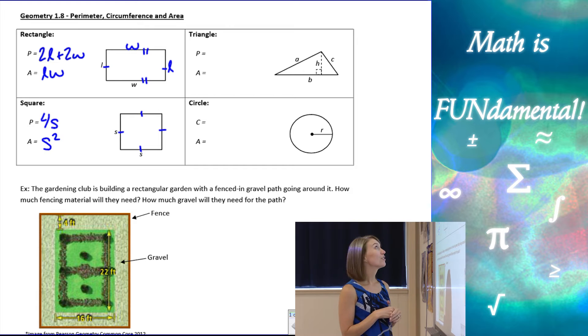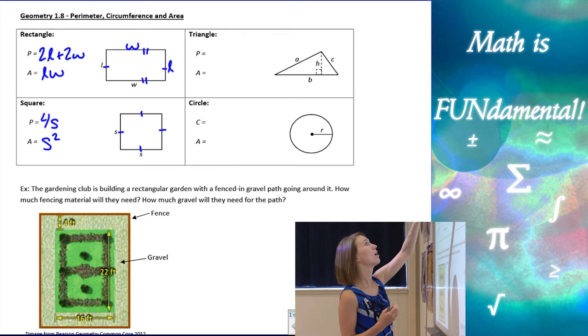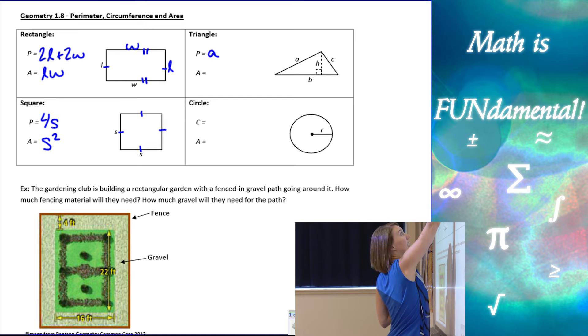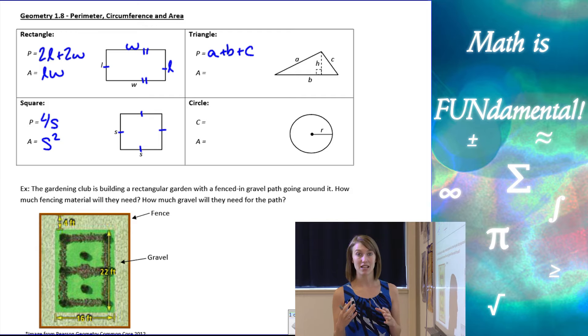For triangle, we have our diagram labeled here. Perimeter, remember, is the length of all the sides of our figure. So if you see that H and that dashed line inside of our triangle, it's not actually one of the sides. So we don't want to include that one in the perimeter. But we do want to have A plus B plus C, adding up all three of those sides of our triangle.